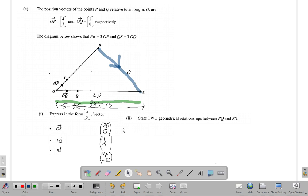Part two says state two geometrical relationships between PQ and RS. Let's see what that is all about.